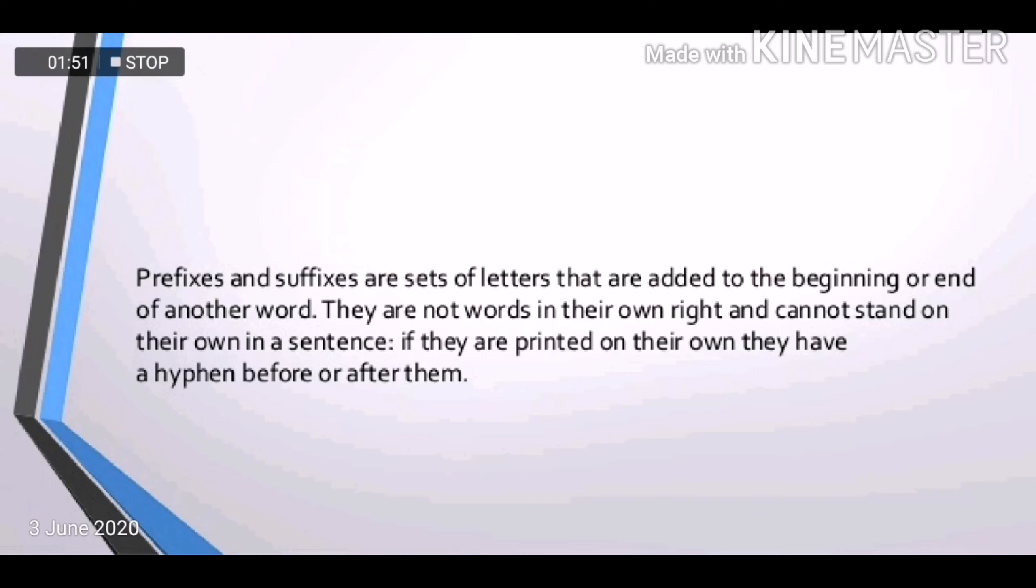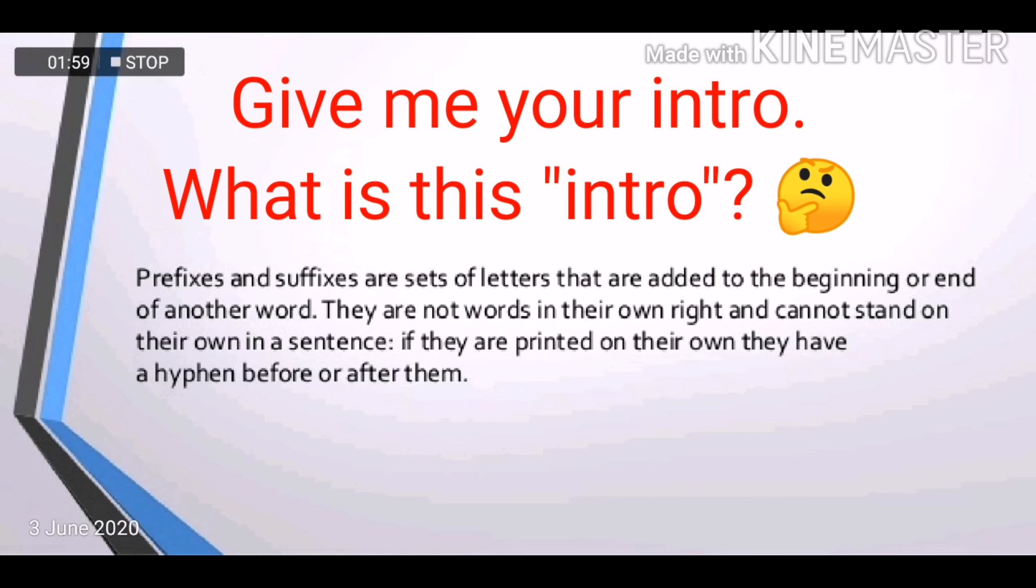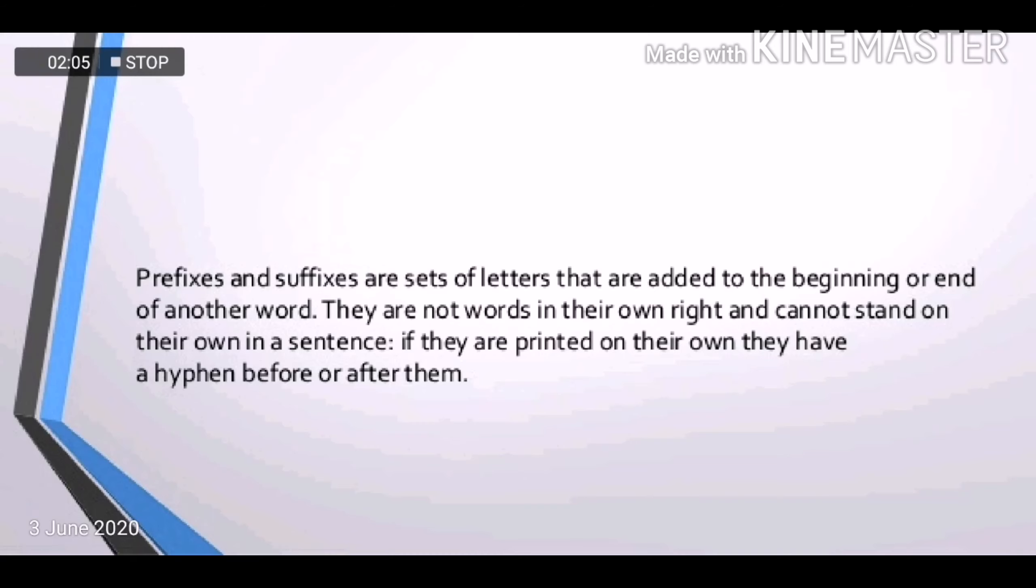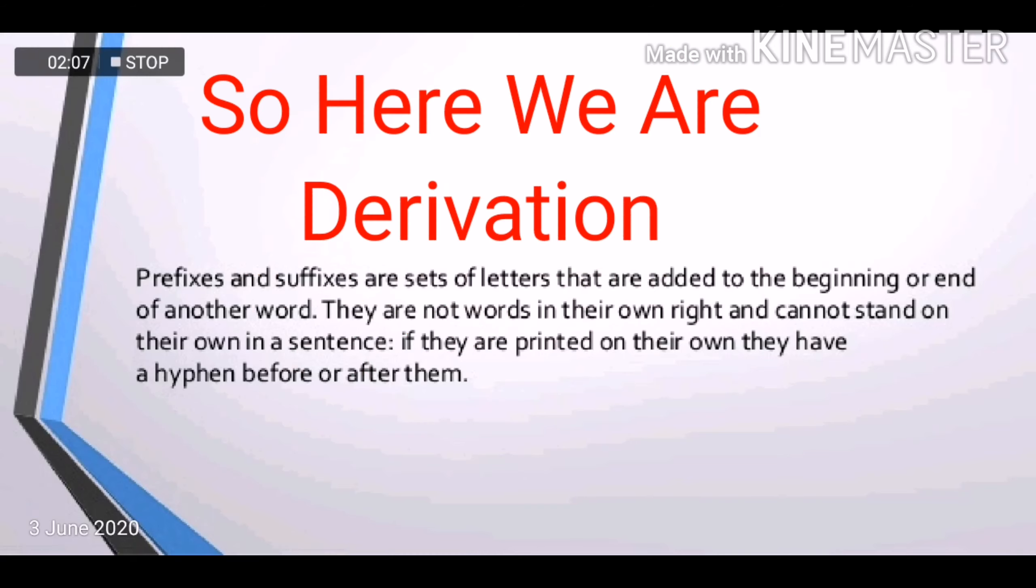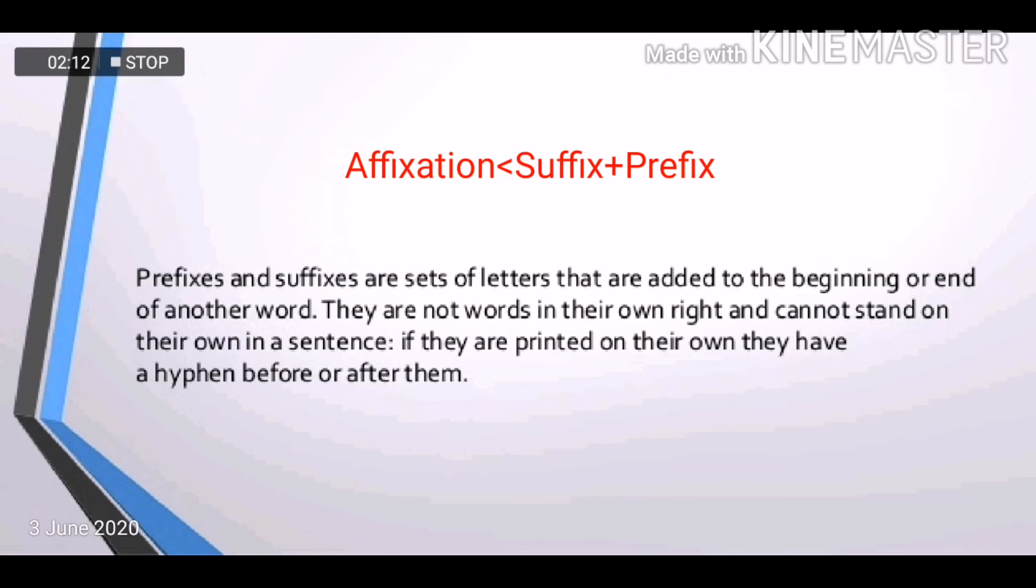Then we have acronym like NATO, COVID, UNESCO. Then we have blending: brunch, sitcom, motel. Then we have compounding: postmaster, classroom. And all these are examples of word formation. Then we have clipping. Clipping is a type of word formation. Examples: ad, intro, info. Info means information. Then we have derivation.